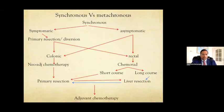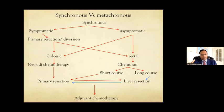This is an important slide — the algorithm to manage a primary with a liver met. For synchronous presentation, it depends whether the patient is symptomatic or asymptomatic. For symptomatic patients — for example, right-sided bleeding or left-sided obstruction — treat symptoms first with resection or diversion/stenting. For colonic disease, give neoadjuvant chemo, then primary resection if not already resected, then liver resection, then adjuvant chemo.